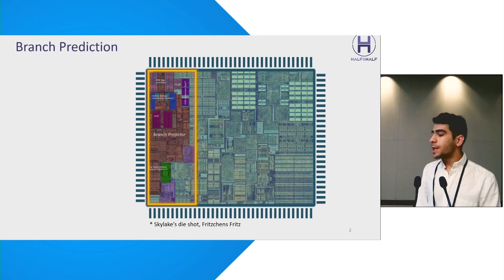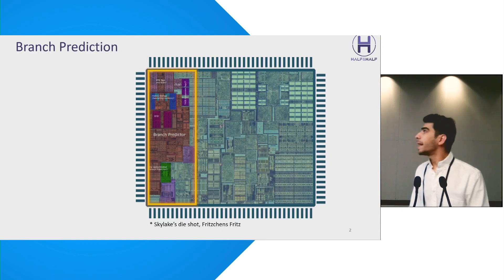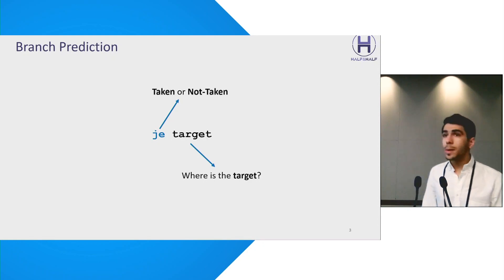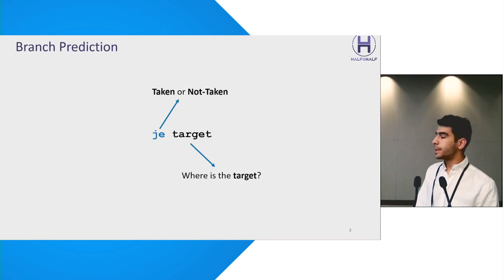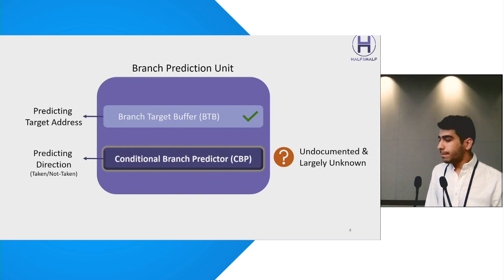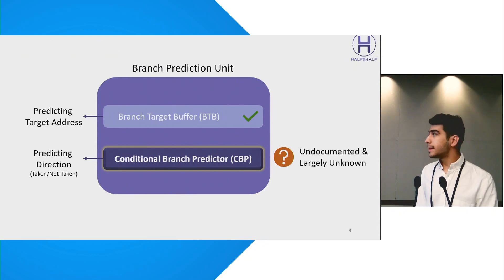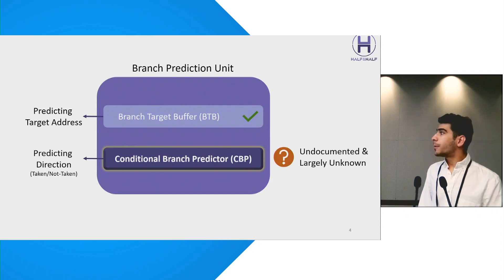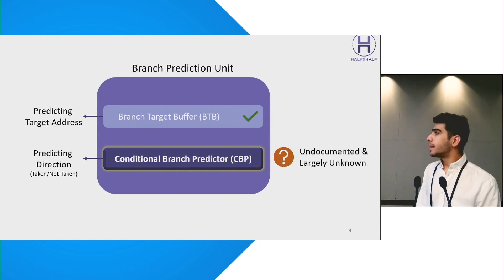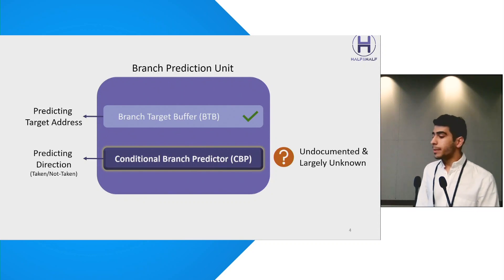We all know that branch prediction is super important for making modern high-performance processors run smoothly and keep the pipeline busy. The branch prediction unit accelerates performance by giving multiple predictions for each branch, like telling whether the branch will be taken or not taken, and even where it is going to lead the program. The branch prediction unit is designed with various structures like a branch target buffer to predict the target and a conditional branch predictor to predict the direction. While researchers have extensively studied the structure of the BTB, the structure of the conditional branch predictor remains largely unknown.